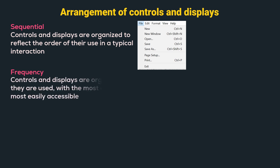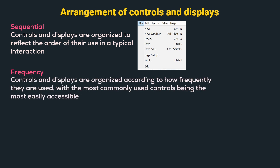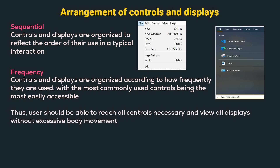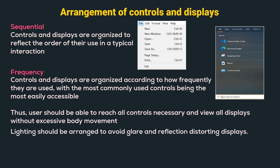The next arrangement is by frequency, where controls and displays are organized according to how frequently they are used, with the most commonly used controls being the most easily accessible. Under the search bar, we can see the most frequently accessed applications. Users should be able to reach all controls and view all displays without excessive body movement. Lighting should also be arranged to avoid glare and reflection, and critical displays should be at eye level.